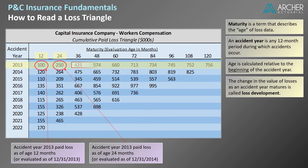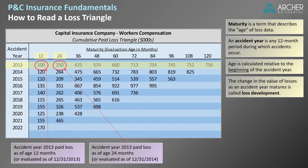As we move from left to right, the cumulative paid losses for accident year 2013 increase. This loss development is the result of claims being paid gradually over time. Some insurance coverages, like workers' compensation, can take several years before all claims are fully paid. Other coverages, such as property, may be fully paid within a few years. The key takeaway is that all values in this row reflect accident year 2013 losses at various stages of maturity. Similarly, one can look at any row and observe how losses develop over time.